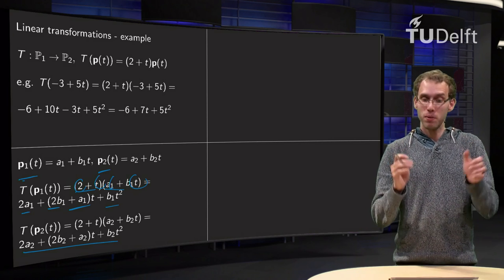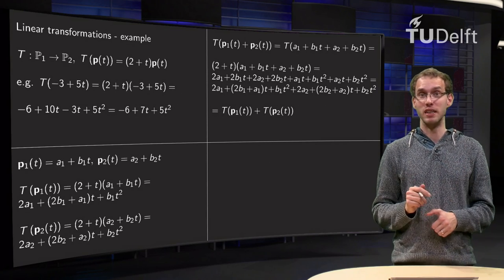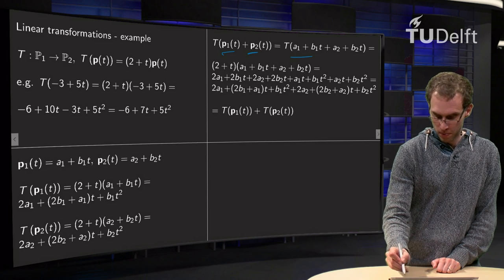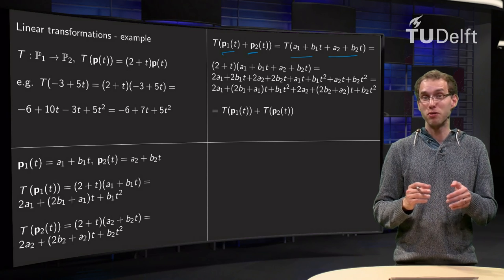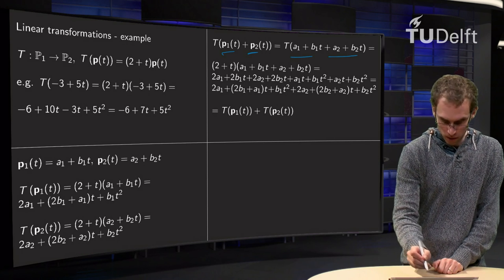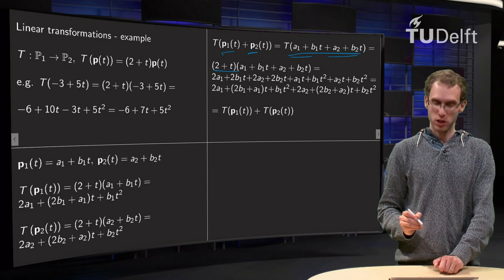Now we have to compute the image of P1 plus P2. That's quite a lengthy expression. So we plug in P1 and P2, and then we compute the image. What did we have to do? We had to multiply by 2 plus t, so we multiply this long expression here by 2 plus t.